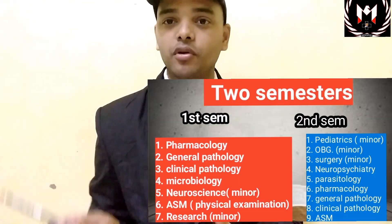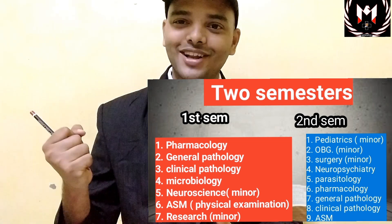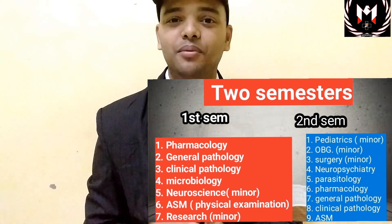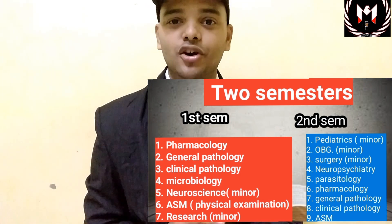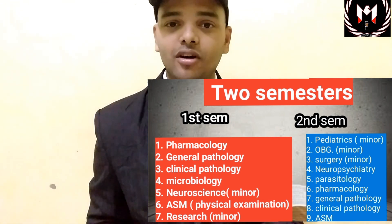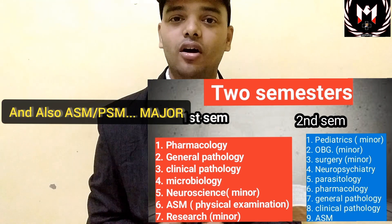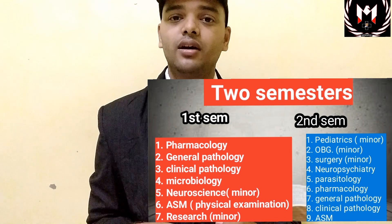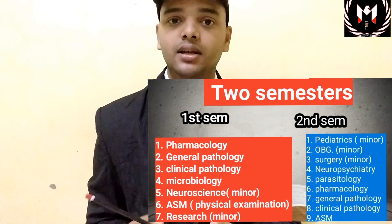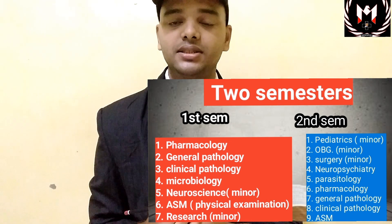In the Philippines, for second year there are two semesters. In second year we have two groups — major groups and minor groups. For the major groups we have pharmacology, which is the toughest one, and pathology — Robbins pathology — which is even tougher. We also have clinical pathology, microbiology, and neuroscience. These are all the major subjects. For the minor subject we have research.